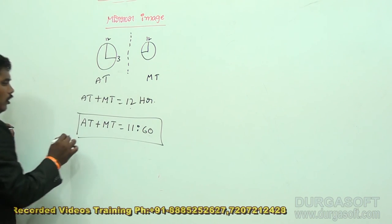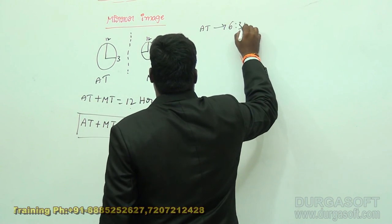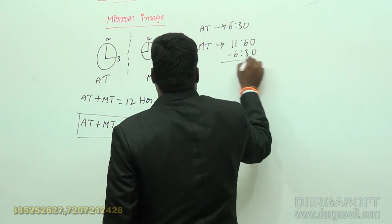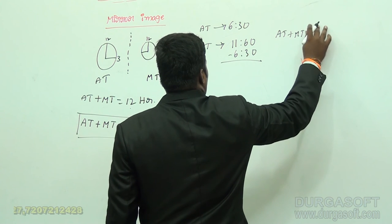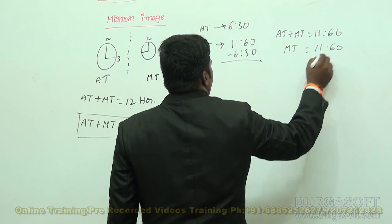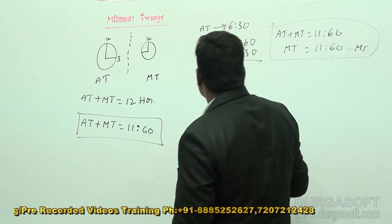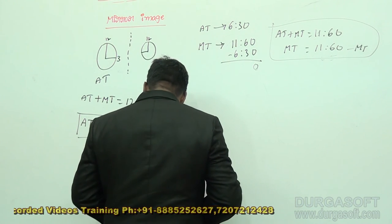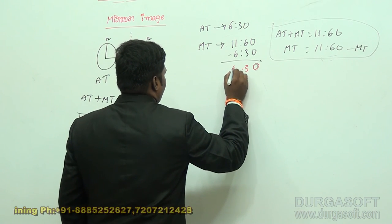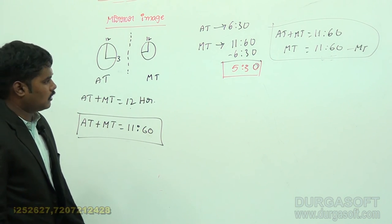When the actual time is 6:30, what is the mirror time? Using the formula: mirror time = 11:60 minus 6:30. So 60 minus 30 = 30 minutes, and 11 minus 6 = 5 hours. The mirror time is 5:30. This includes the relative position of both hands, so you get the exact answer.